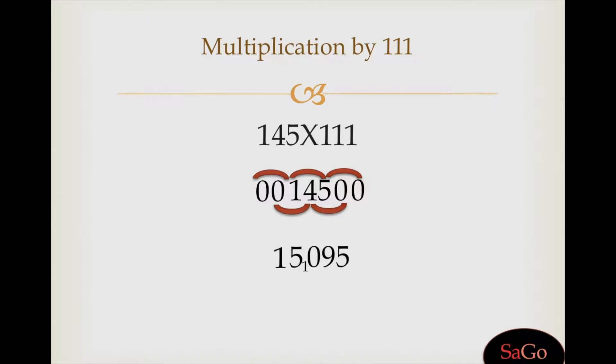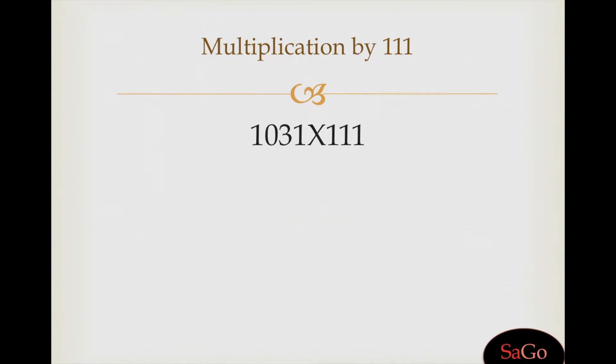Now we need to adjust this carry and then we'll have the perfect answer. Five as it is, nine as it is, zero as it is. Now this one would be carried over in five and it will become six, write six, and one as it is. Our complete answer is 16095.